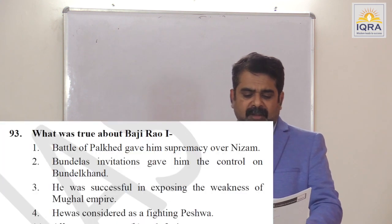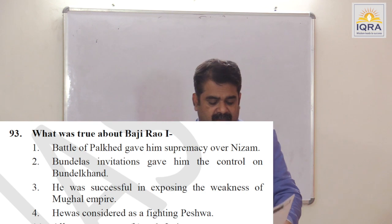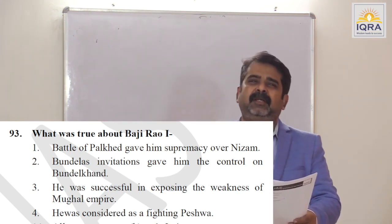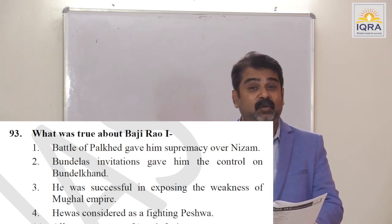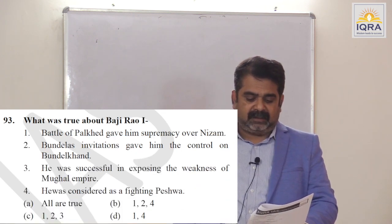What was true about Bajirao I? Battle of Palkhed gave him supremacy over the Nizam. He takes the Chauth and Sardeshmukhi from 6 Mughal provinces. Bundelas' invitation gave him control over Bundelkhand — Chhatrasal invited him. He was successful in exposing the weakness of the Mughal Empire — while on expedition to Bundelkhand, he took a picnic trip to Delhi in 1737 and no one opposed him. He was considered a fighting Peshwa. Answer is A.